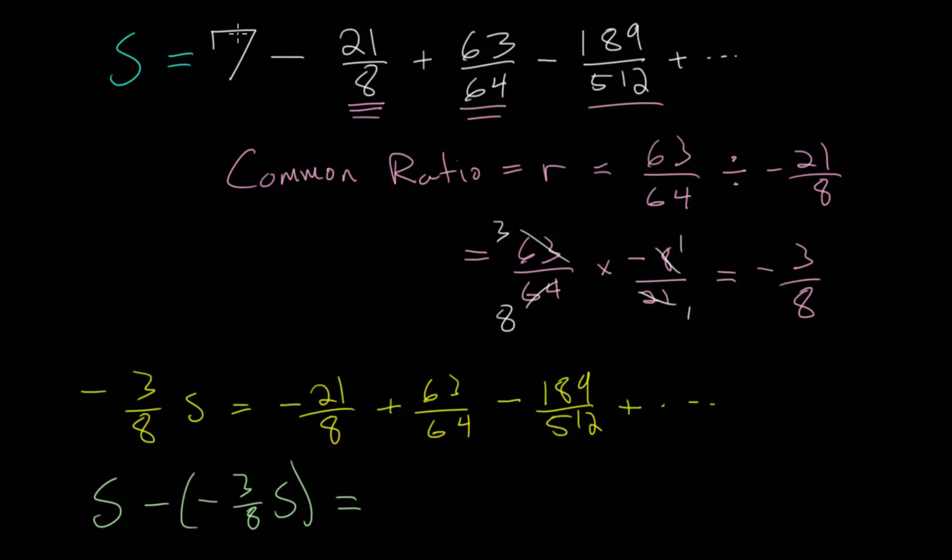And to subtract the bottom one from the top one, notice that if we go term by term, we have 7 here, but we don't have a 7 down here to actually subtract. So, the 7 will remain, but we have a minus 21 over 8, and we're subtracting minus 21 over 8, which is really just adding 21 over 8, and so these will cancel out.